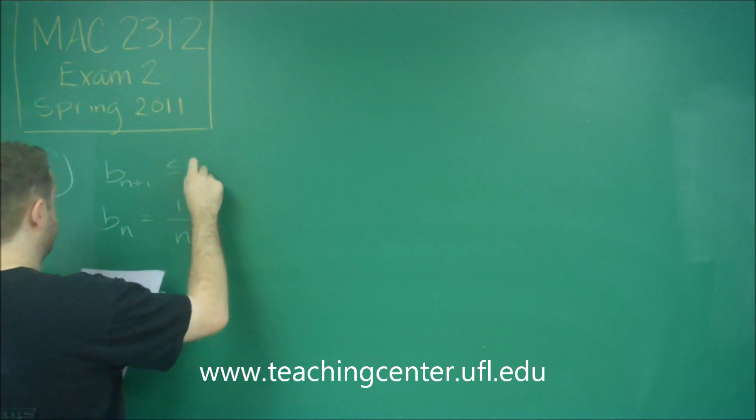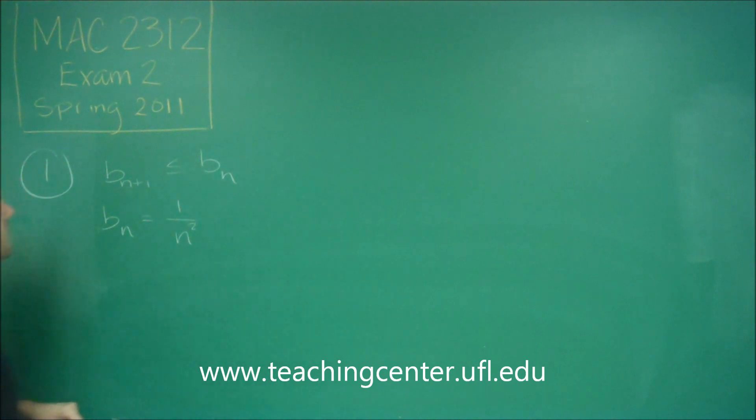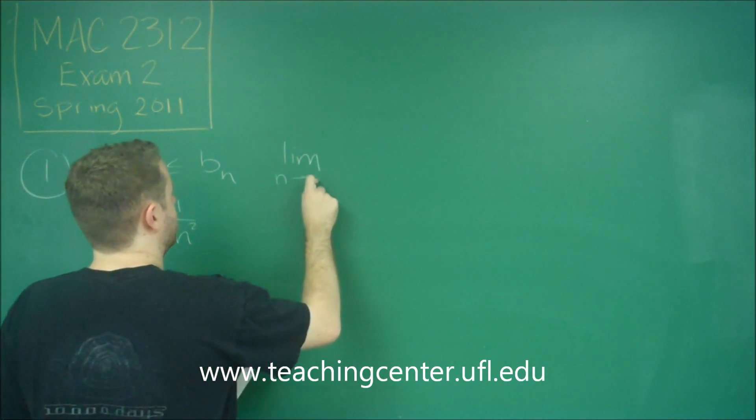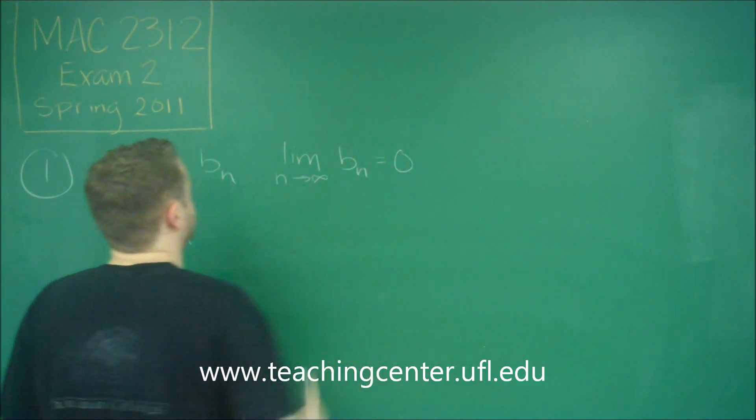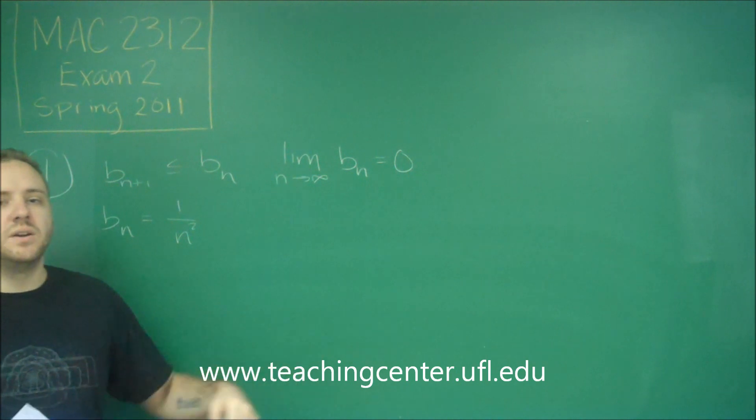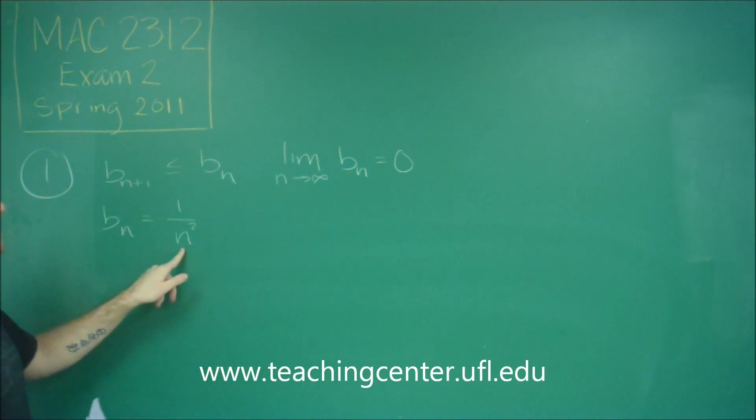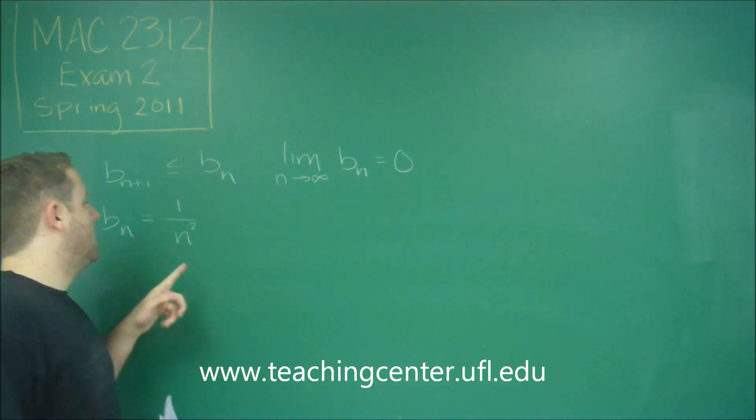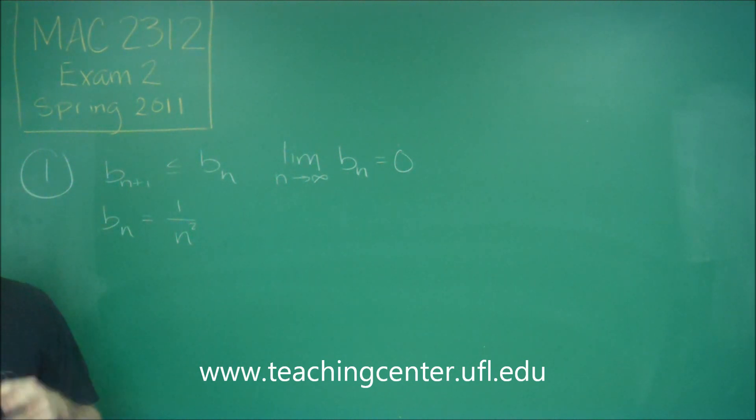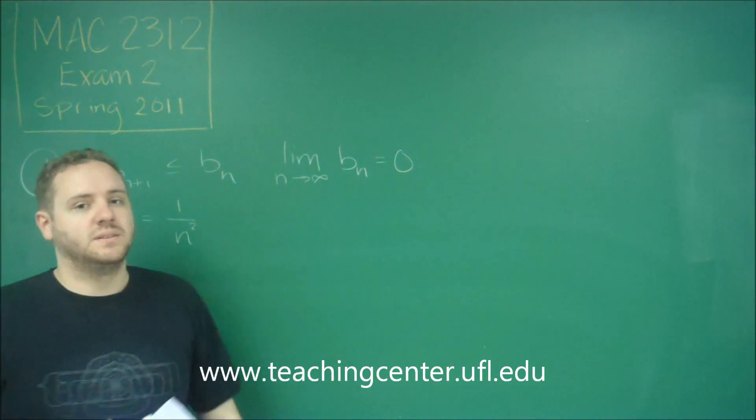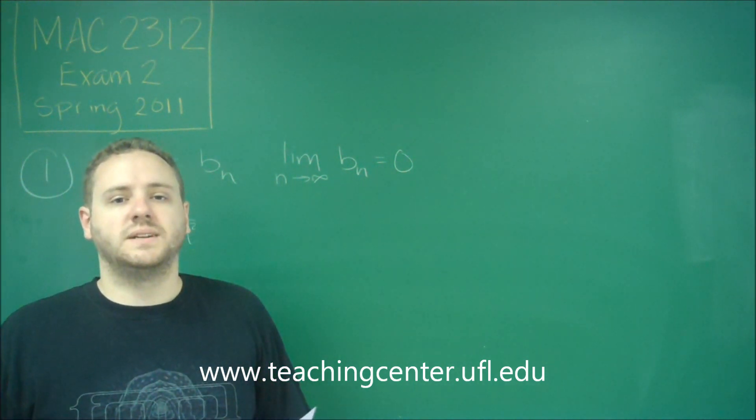So we need to verify two things: that the series is decreasing, so these parts that are not alternating need to be decreasing from n to n plus 1, and that the limit as n approaches infinity of b sub n is 0. You can see here, these two things are easily verified with this function. As n increases, the denominator of this fraction is just going to get larger, meaning that any n plus 1 is definitely going to be smaller than the term that just had n. The limit as n goes to infinity, you have a higher degree on the denominator—if you think of this as a rational function, its limit is definitely 0.